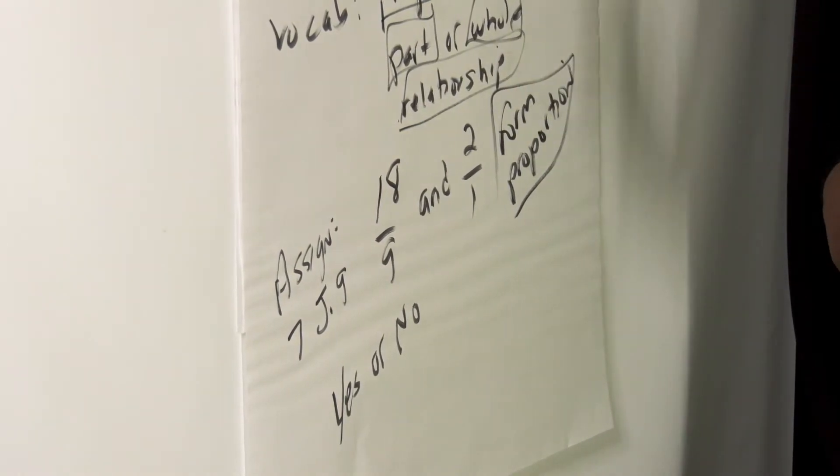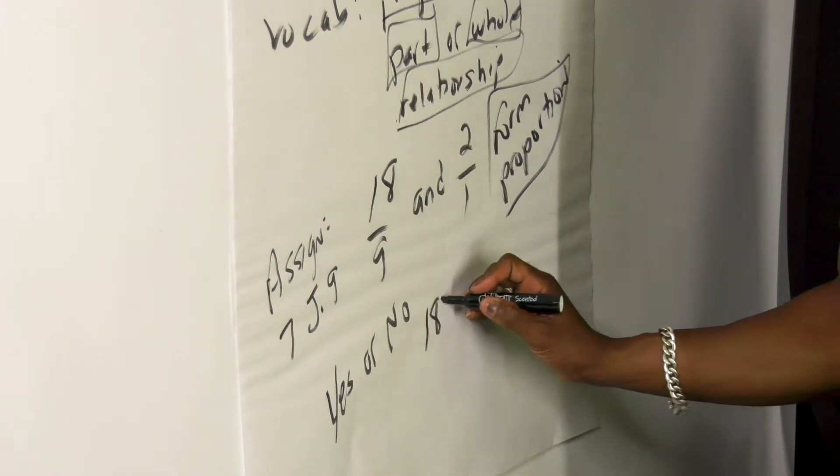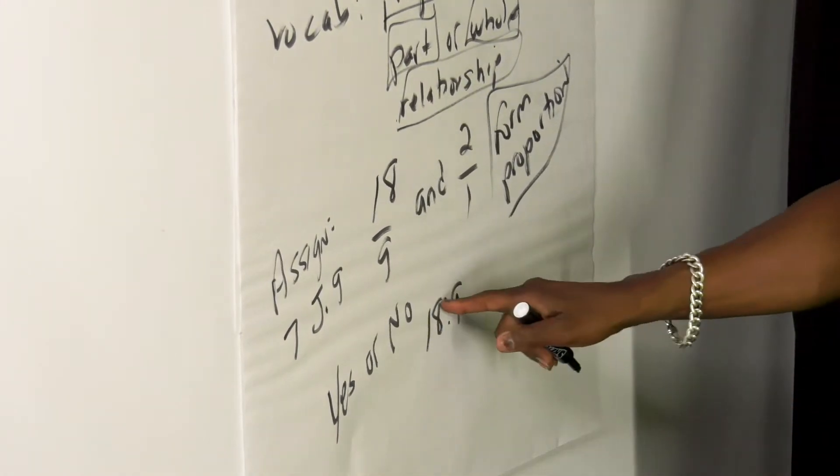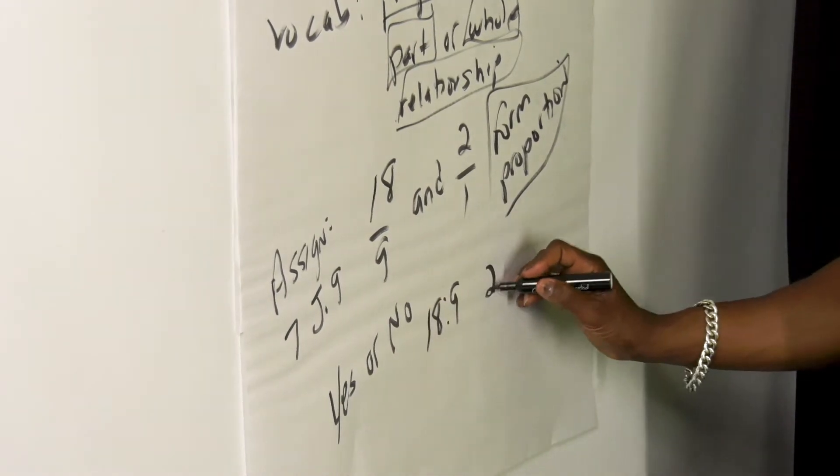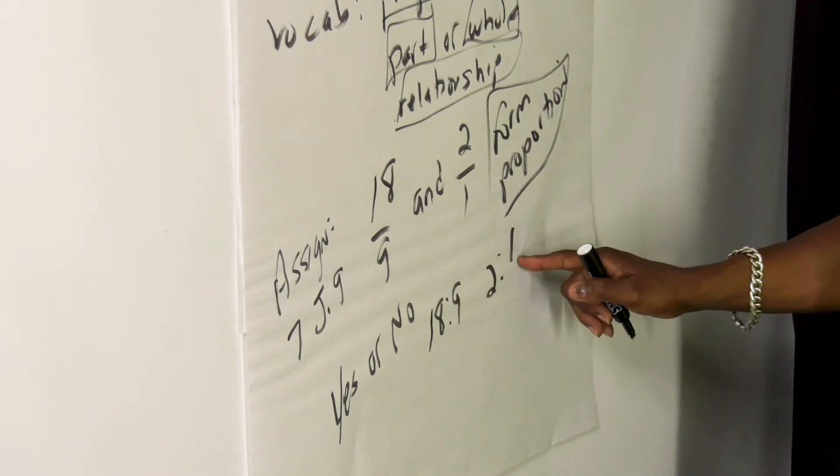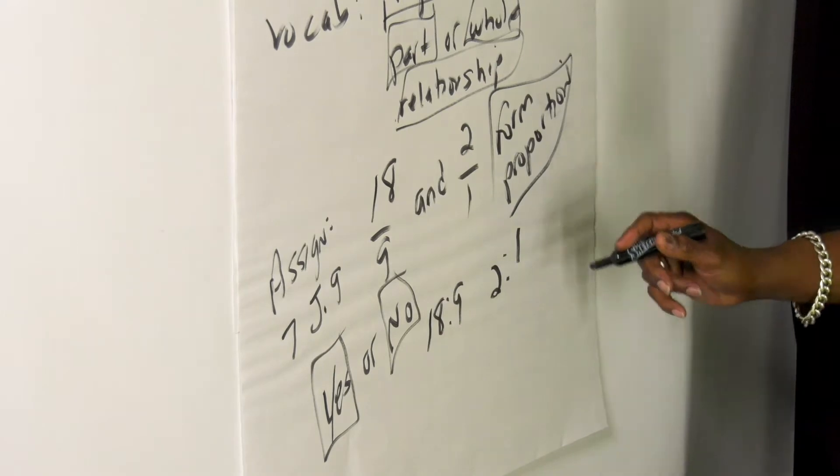In this particular example, we're going 18 over 9. Now, if we were writing it as a ratio, it'd be written as 18 in relationship to 9, colon 9, or 2 with a colon and a 1. Now, we want to answer yes or no.